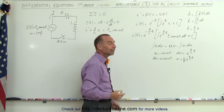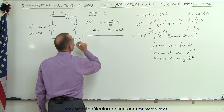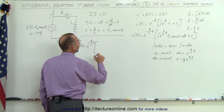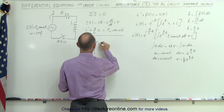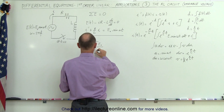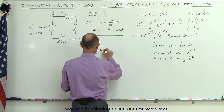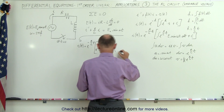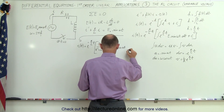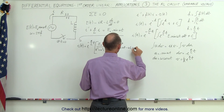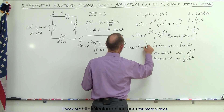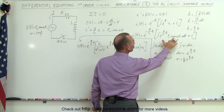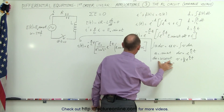When you apply integration by parts twice and plug everything in, the solution becomes I as a function of time equals E to the minus R over L times time, times E sub-naught divided by R squared plus omega squared L squared, times E to the R over L times time, times the quantity R times the sine of omega t minus omega L times the cosine of omega t, plus a constant of integration.